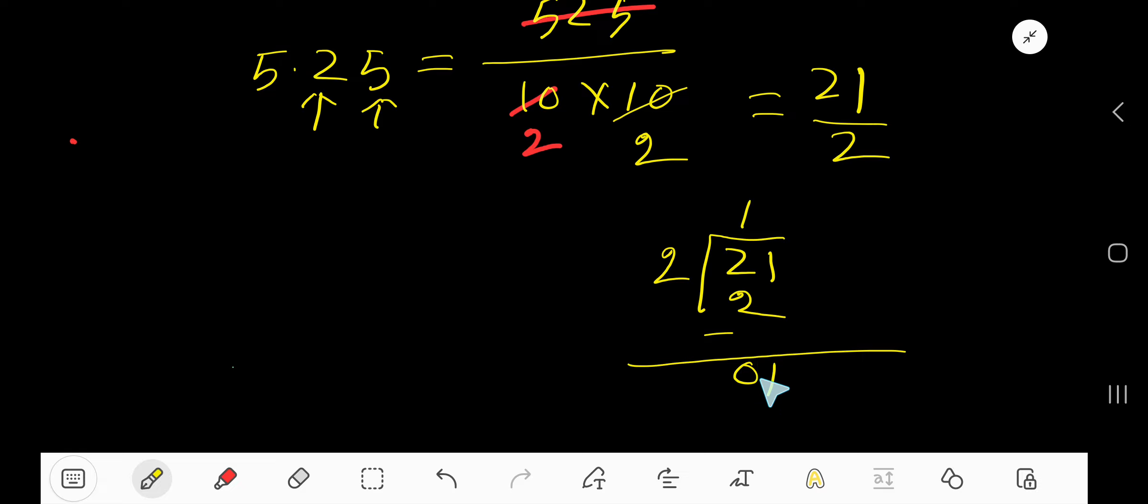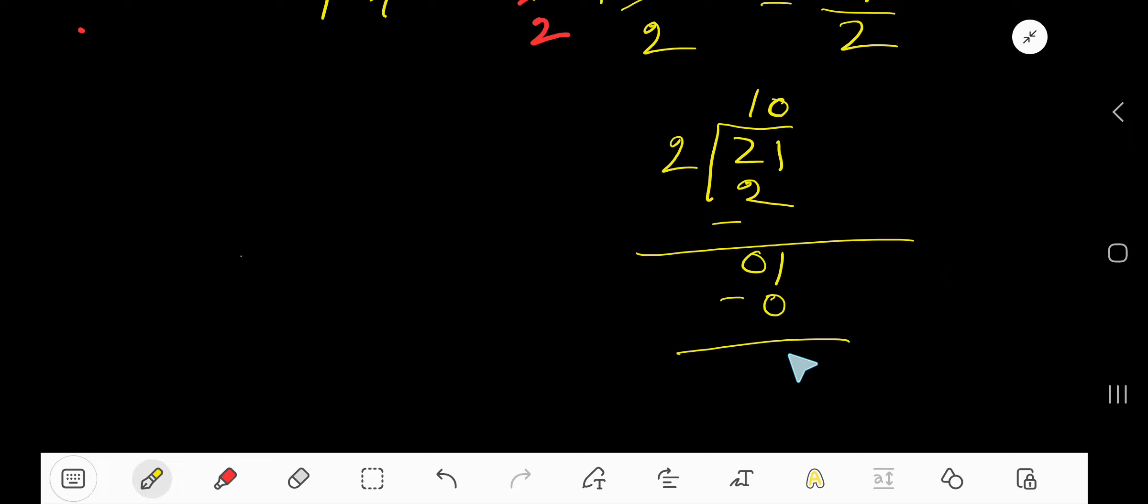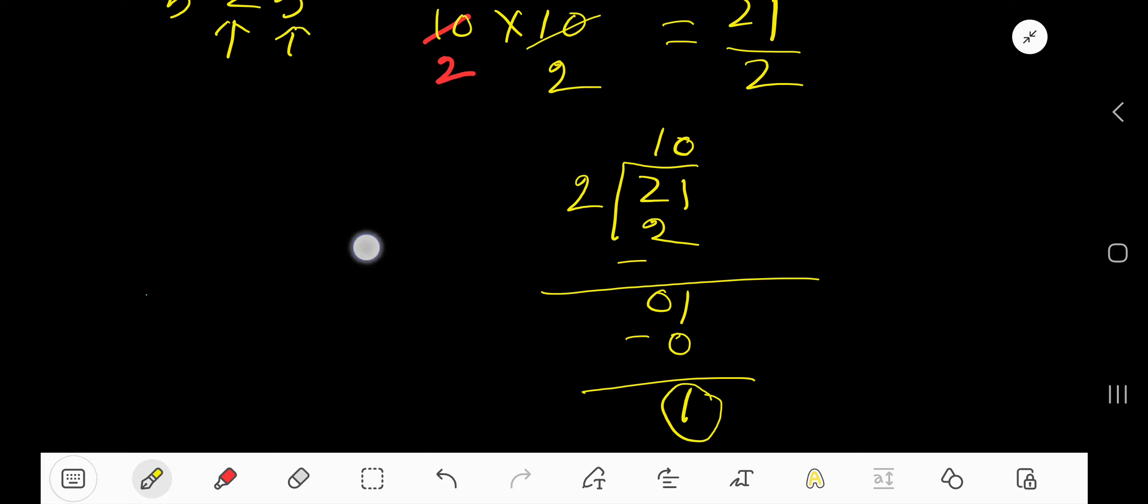2 goes into 1 how many times? 0 times. 0 times 2 is 0. If you subtract, then you will get 1. That is, 1 is your remainder. So this is your quotient will be whole number. Remainder will be the numerator and divisor will be the denominator. That is, 10 and 1 half is the answer.